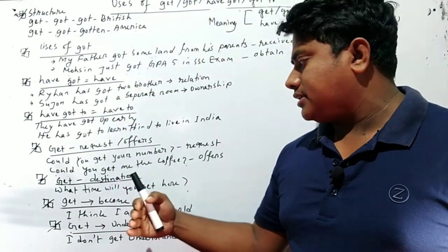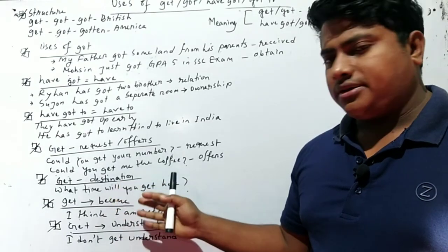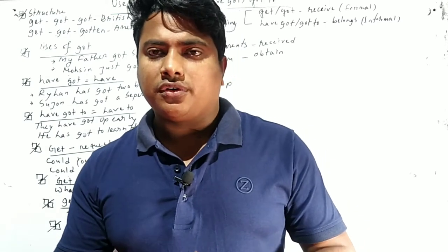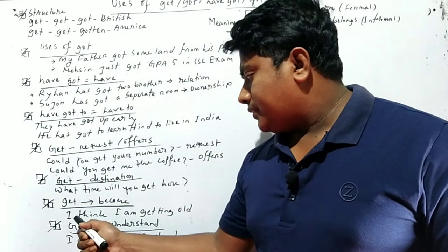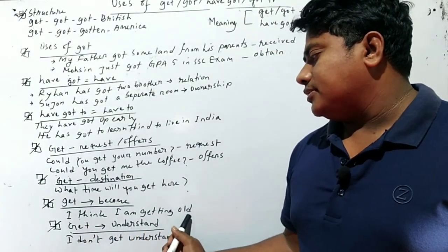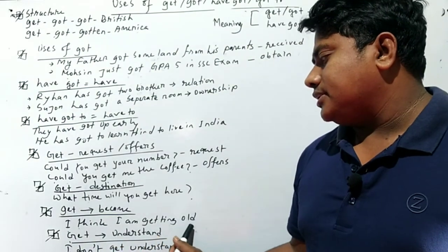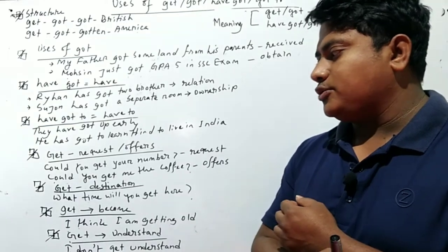Here I offer him to either take coffee or not. So here get means offer. Another use of get: get means destination. What time will you get here? Actually, what time will you arrive here or reach here? It means the destination.